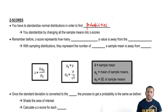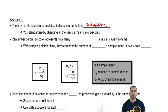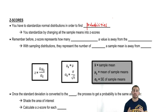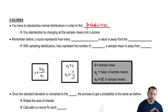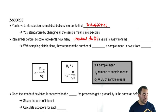You standardize by changing all the sample means. Before, we dealt with individual observations or individual values, and we treated those individual values and made them z-scores. Now we're going to talk about sample means — we're going to have a sample, have an average, and with that average convert it to a z-score. Remember, z-scores represent how many standard deviations away a value is from the mean.